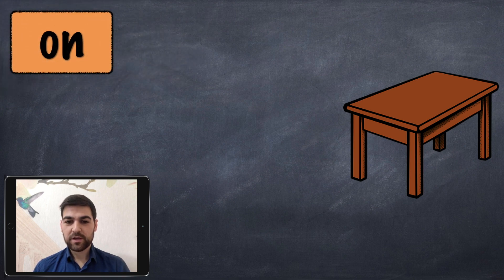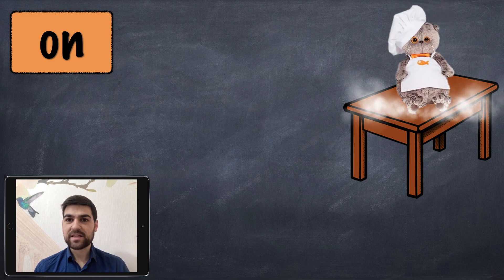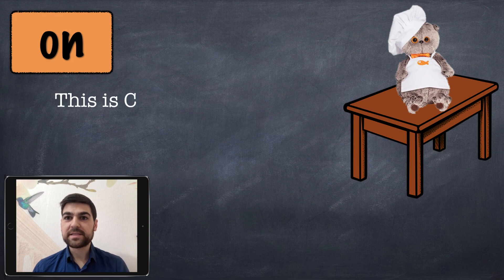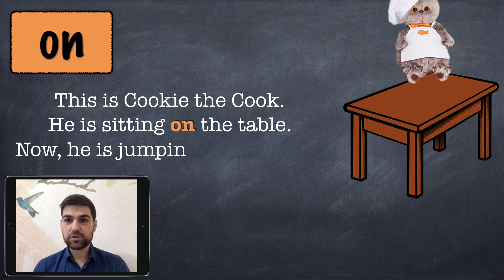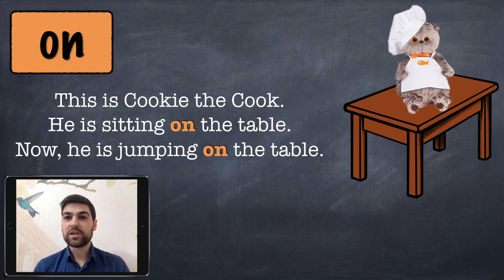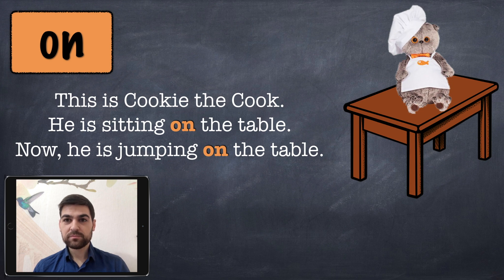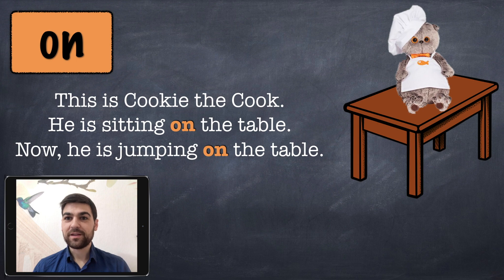You can see a picture of a table, and now you can see a cat. This is Cookie the cat and he is sitting on the table. So if I ask where is the cat, you would say the cat is on the table. Now he is jumping on the table.